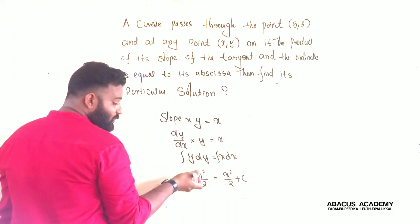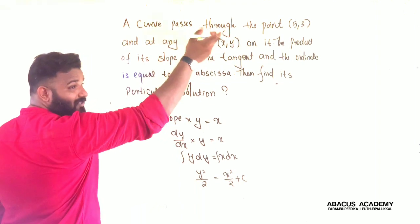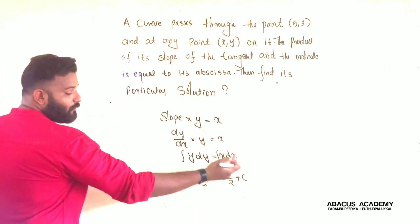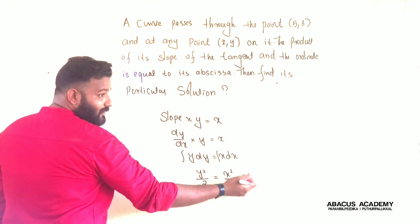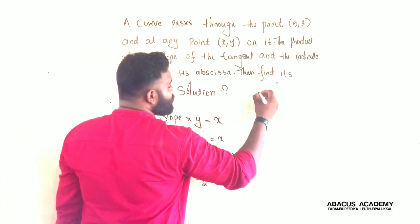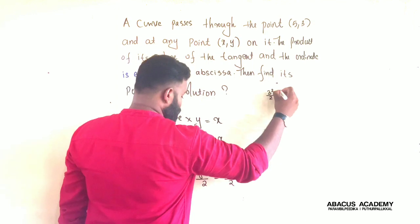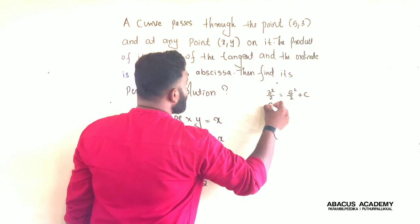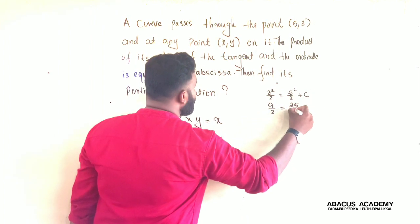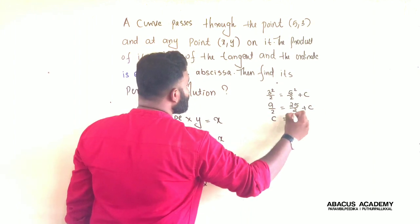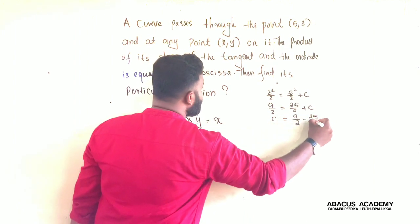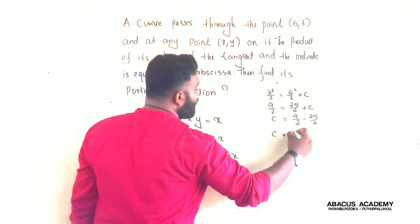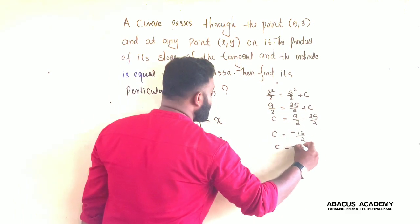We know that this curve passes through the point (5, 3), which is the boundary condition of this curve. We substitute that point to get the value of the integral constant c. So 3 squared by 2 equals 5 squared by 2 plus c, giving us 9 by 2 equals 25 by 2 plus c. Then c equals 9 by 2 minus 25 by 2, which gives minus 16 by 2, so c equals minus 8.